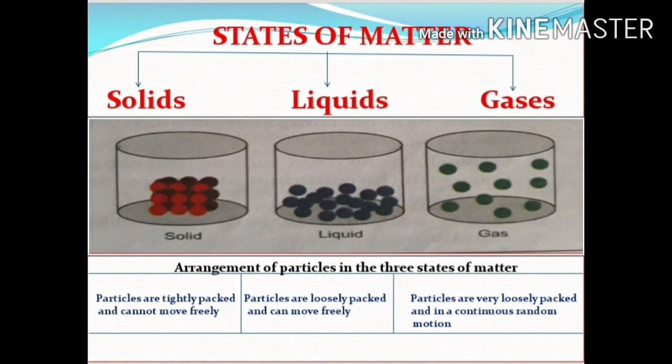Water and milk are examples of liquids. The particles in a liquid are slightly less close-packed; the intermolecular bonds are strong, meaning particles are loosely packed and can move freely. Hydrogen and oxygen are examples of gases. The particles in a gas are spread out; the intermolecular bonds are weak, meaning particles are very loosely packed and in continuous random motion.